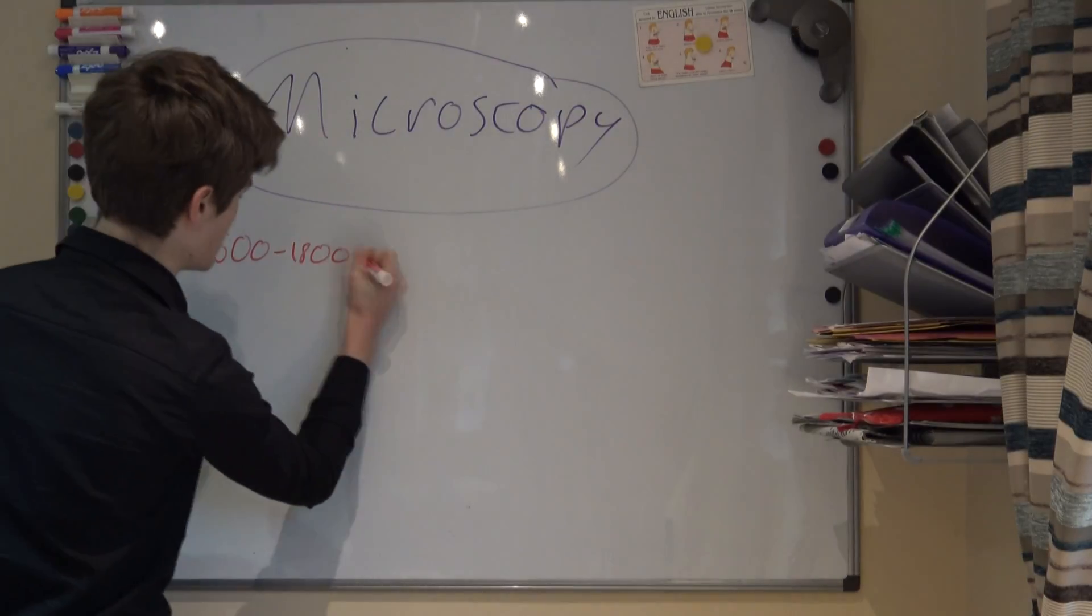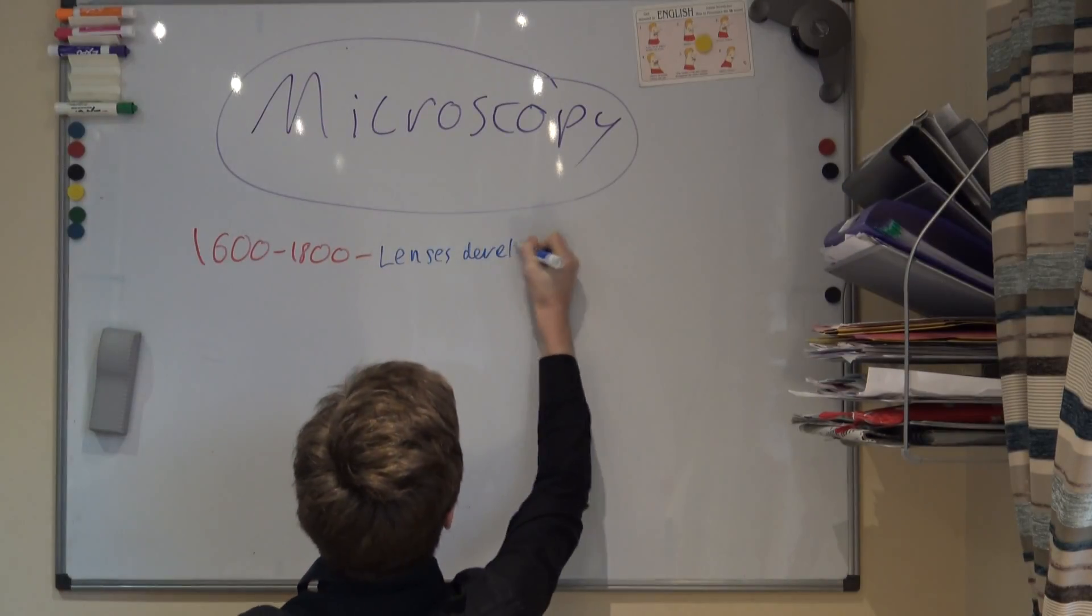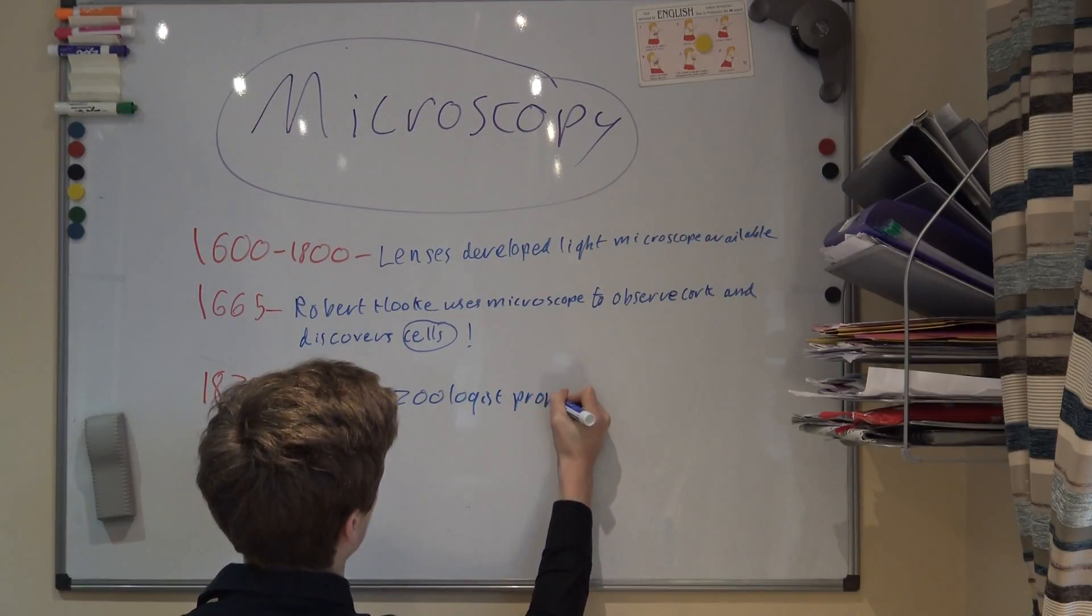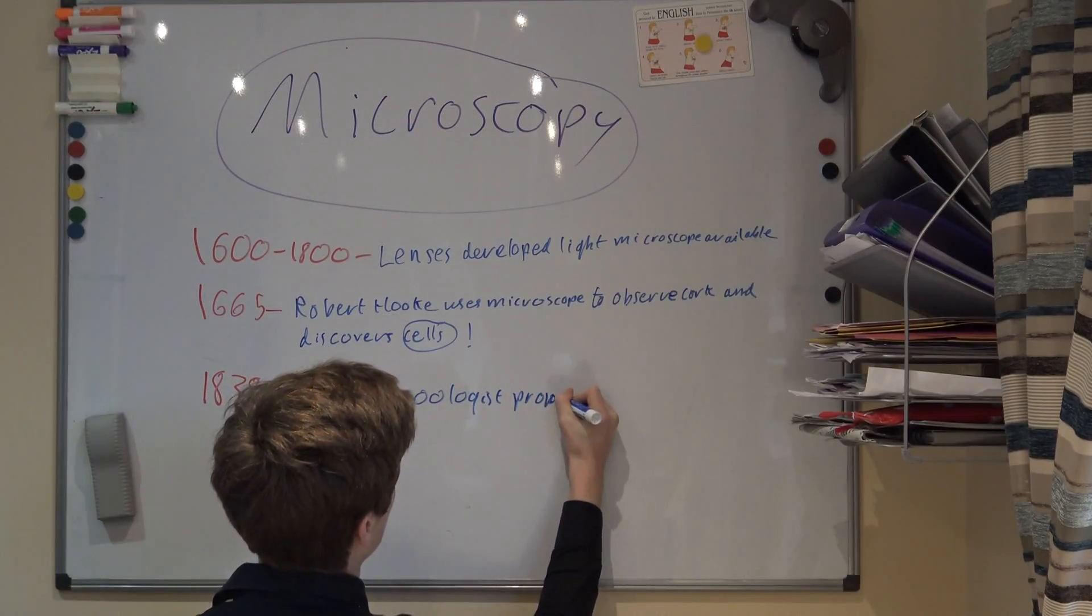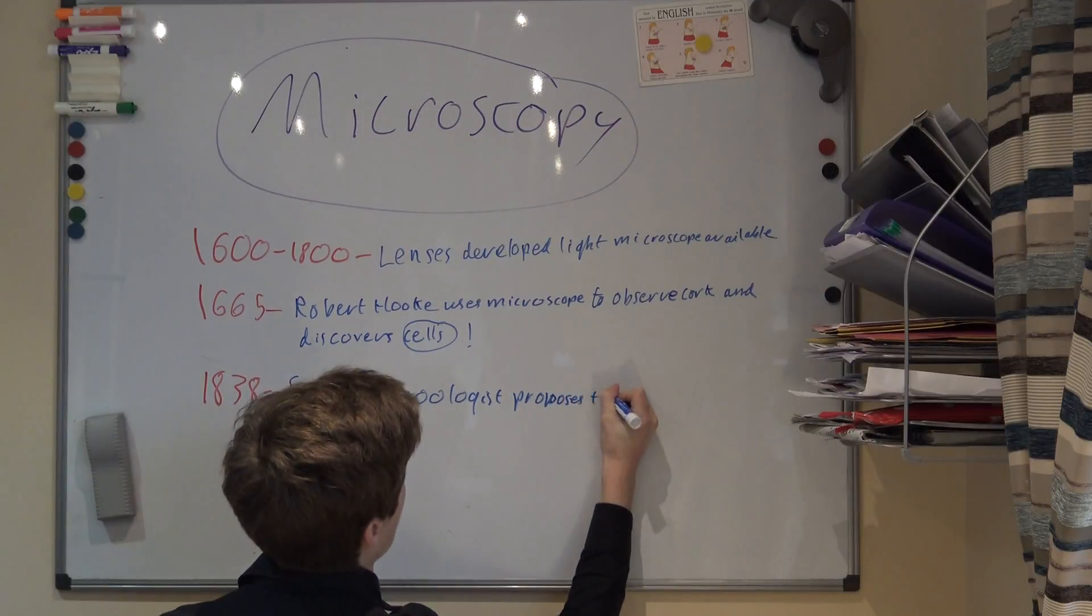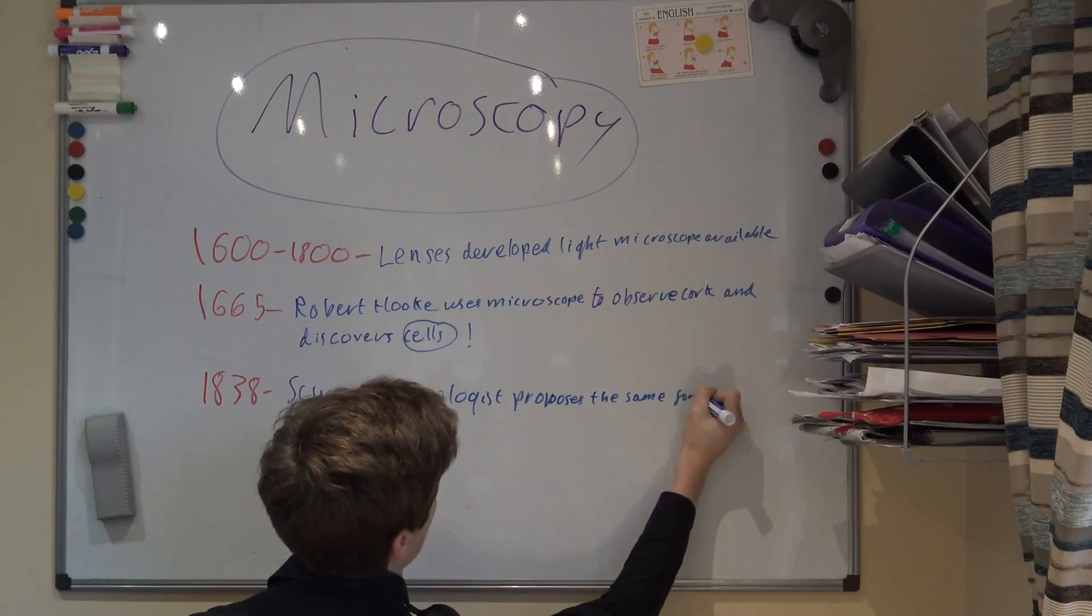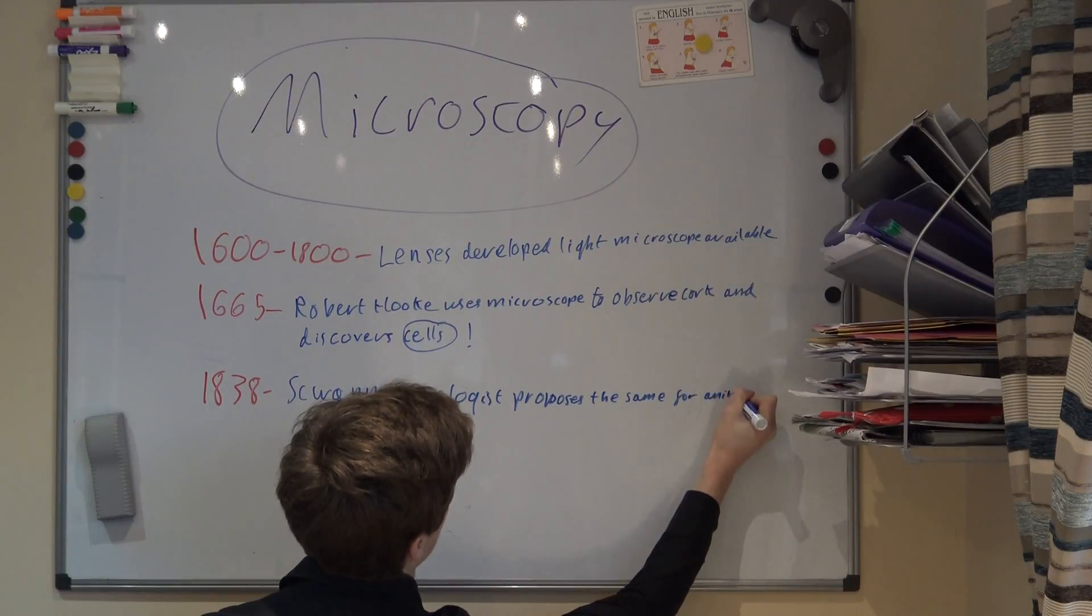The first types of microscopes to be developed were the light microscopes in the 16th and 17th century. From that point, microscopy has been developed and improved. By the mid-19th century, scientists for the first time had access to microscopes that had a high enough level of magnification to see individual cells.